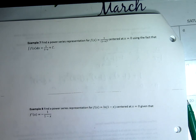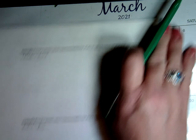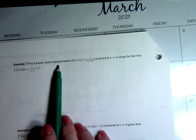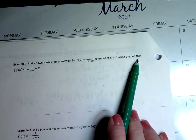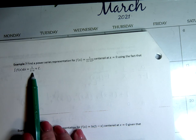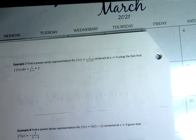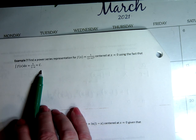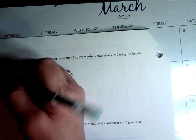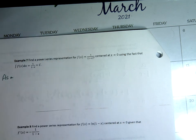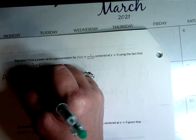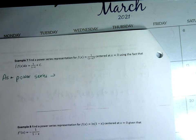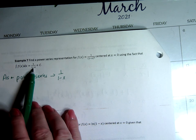Example 7: find a power series representation centered at x equals 0 using the fact that the integral of the function is 1 over (1 minus x) plus C. If the integral is 1 over (1 minus x) plus C, then that means 1 over (1 minus x) is actually my function — it's gone backwards. So I'm going to take a power series of 1 over (1 minus x) because that's my function.